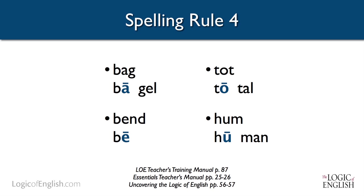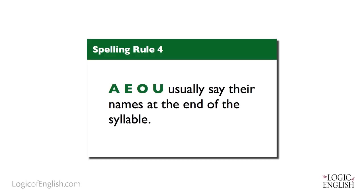So we have 'bag' and 'bagel,' 'bend,' 'be,' 'taut,' 'total,' 'hum,' 'human.' What do you notice? The vowel is saying its long sound at the end of the syllable. And that is summarized by the rule: A-E-O-U usually say their names at the end of the syllable.